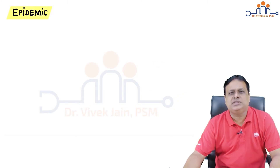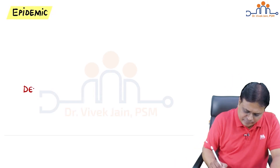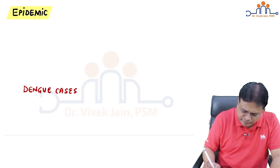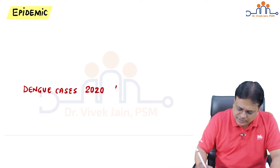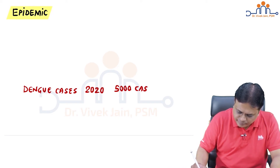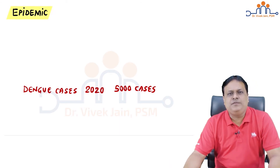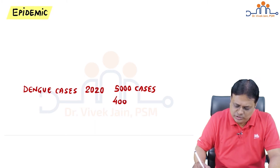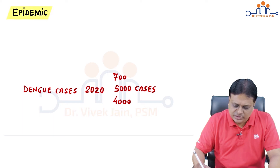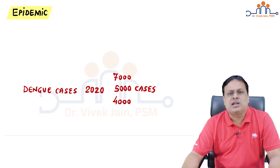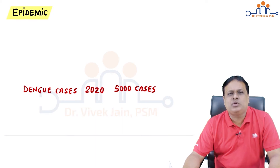What exactly is epidemic by definition? We need to understand this right now. Suppose I say dengue cases in Delhi in the year 2020 is 5000 cases — is it an epidemic? If you say yes, I will reduce the number to 4000. If you say no, I will increase it to 7000. So at which number do you decide it is an epidemic? The answer is: we cannot decide just by looking at a single number. Epidemic has a technical definition.